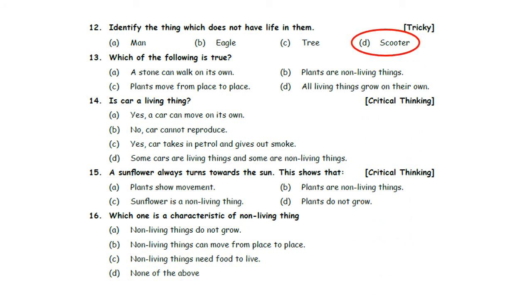Thirteenth: Which of the following is true? Option A: A stone can walk on its own. Option B: Plants are non-living things. Option C: Plants move from place to place. Option D: All living things grow on their own. A stone is a natural non-living thing, so it cannot walk on its own — Option A is false. Plants are actually living things, so Option B is also false. Plants cannot move from place to place, so Option C is false. All living things grow on their own, so Option D is the correct answer.